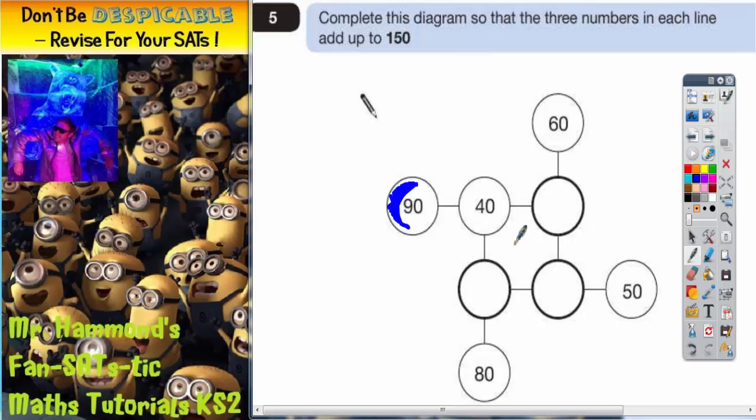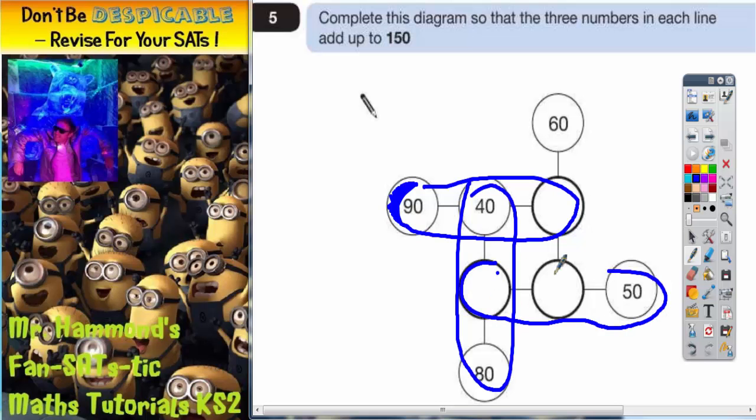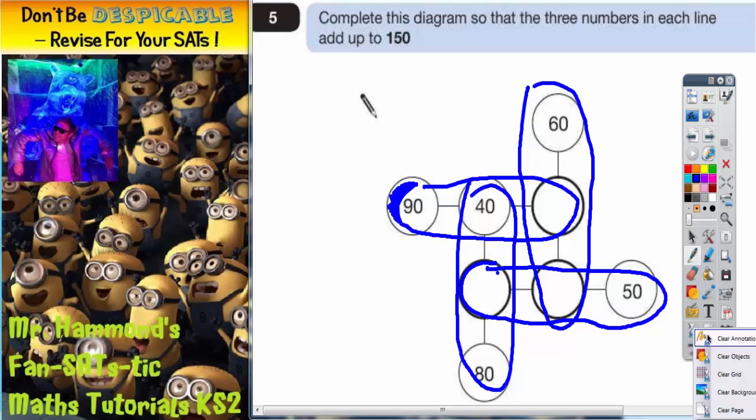We've got several lines to be making up to 150. This line's got to make 150, this line's got to make 150, this line's got to make a total of 150, and this line's got to make a total of 150. So there's actually one, two, three, four lines that have to make a total of 150.